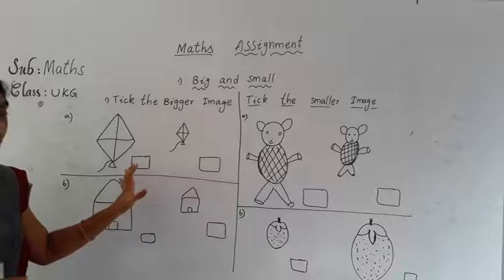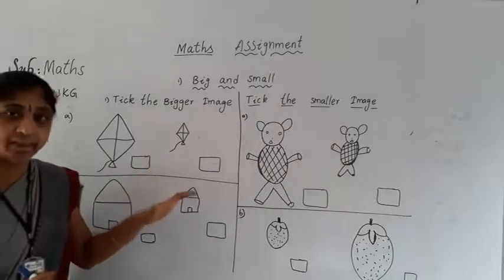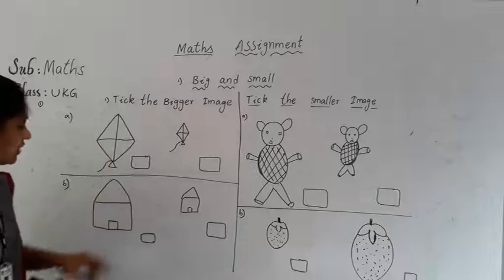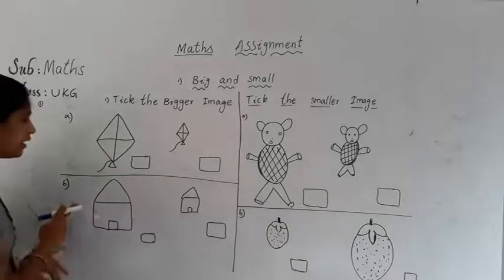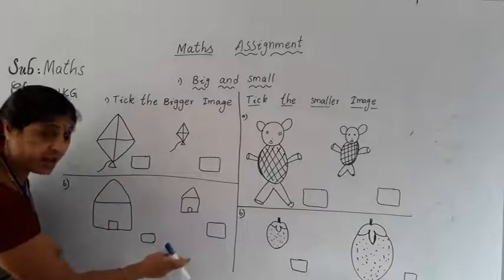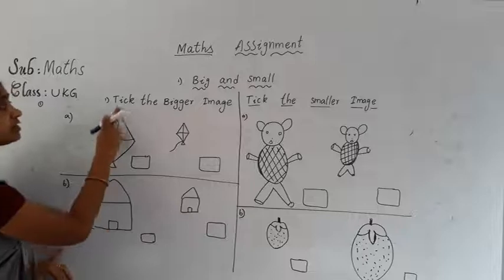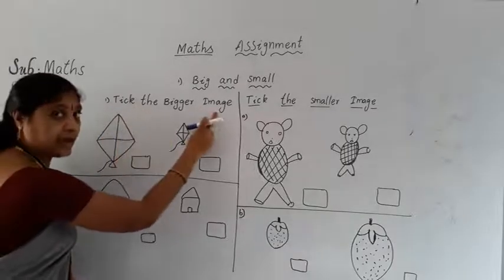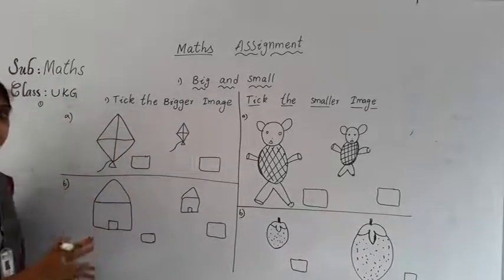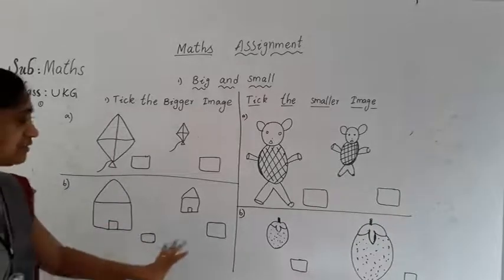These are kites. In these kites, which one is the big? You select and tick it. Next, second one — what is this? These are hearts. In hearts, what is the question? Tick the bigger image. You think which one is the big? You select and tick it.